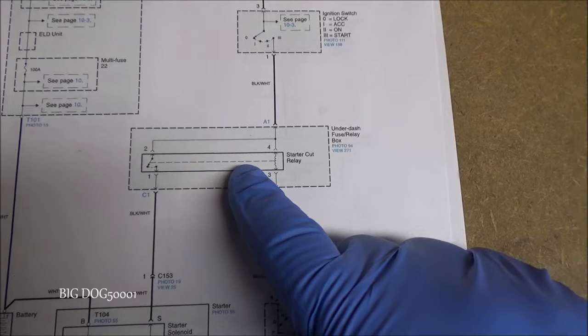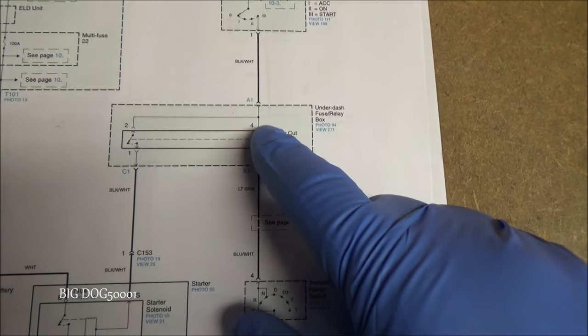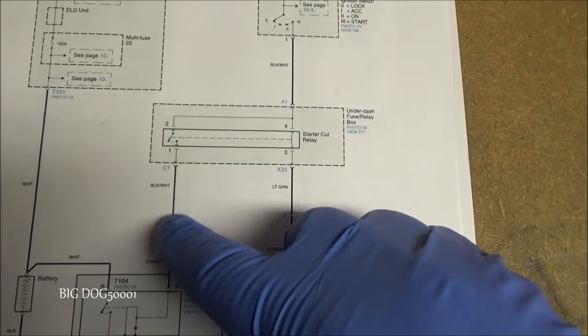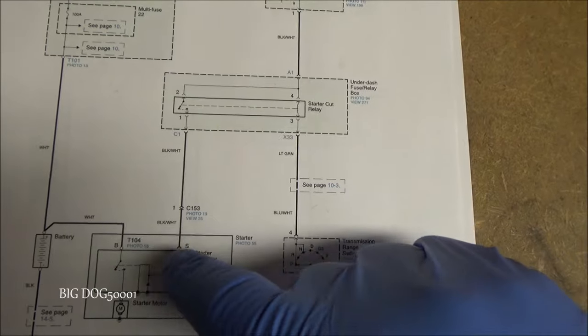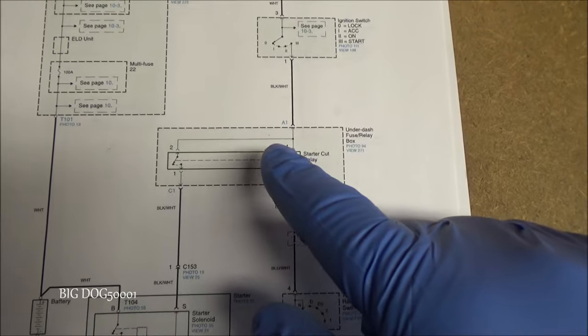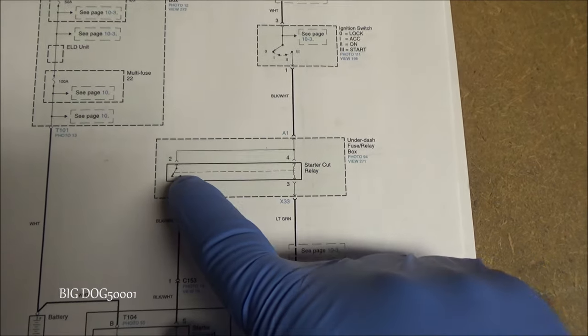When it comes to relays, you definitely want to know which side is our control side, which is controlling the circuit, and which side is just actually supplying current down to our component. In this case, it's going to be a starter. Always know, when you're working on circuitry like a relay, we need to know which side is our control, which side is our load.